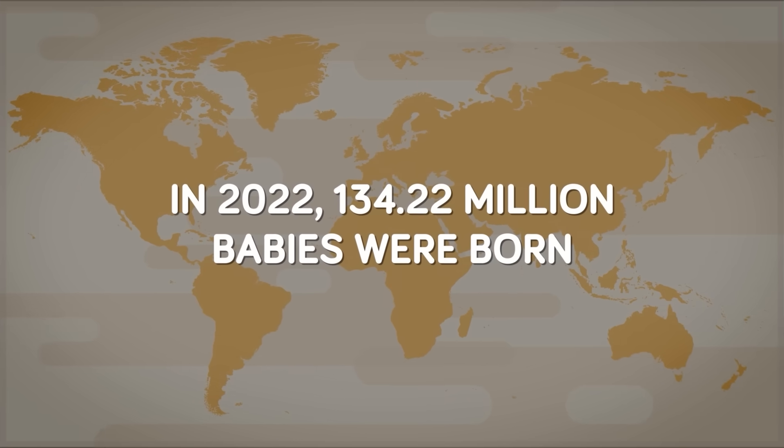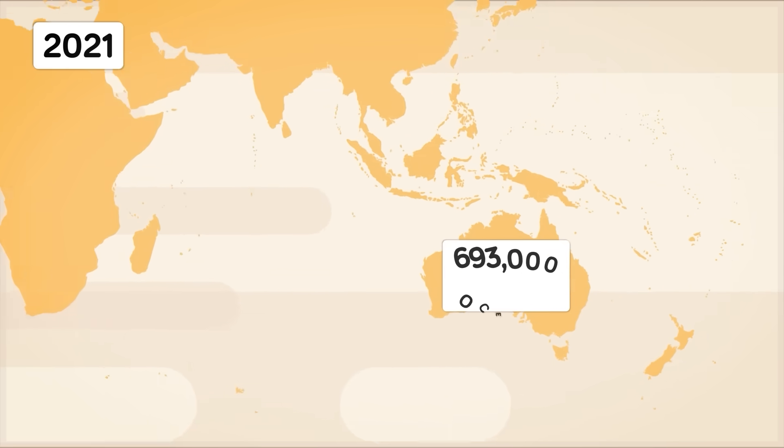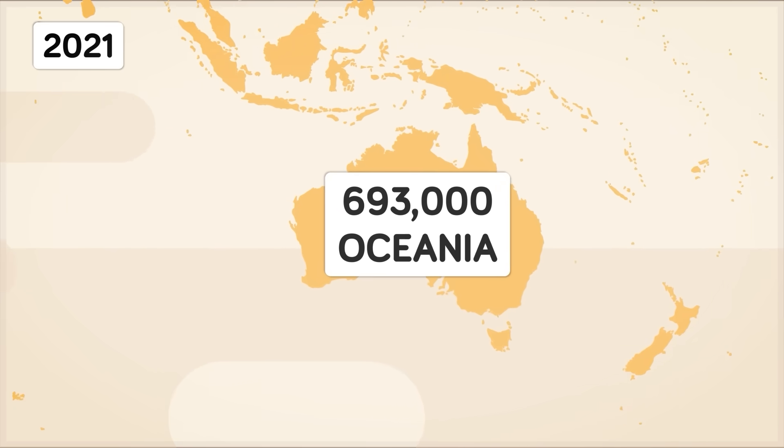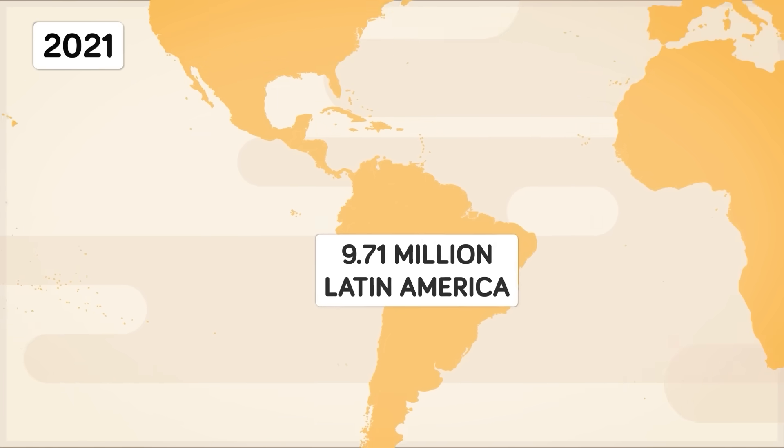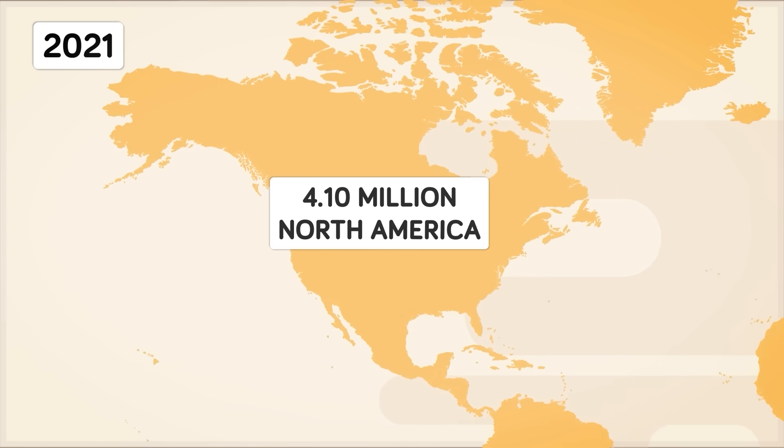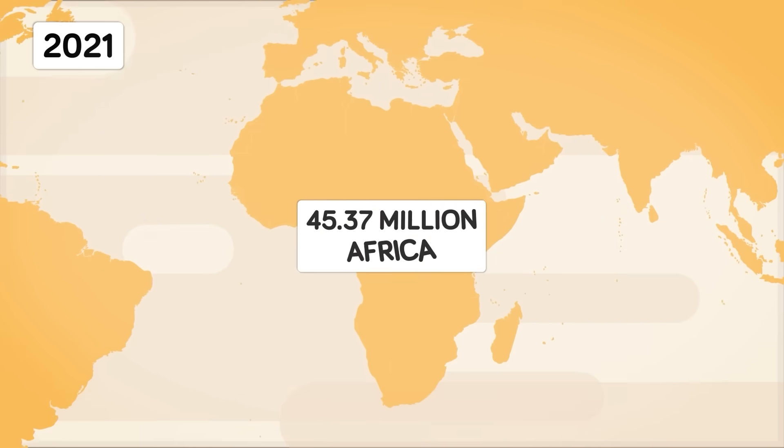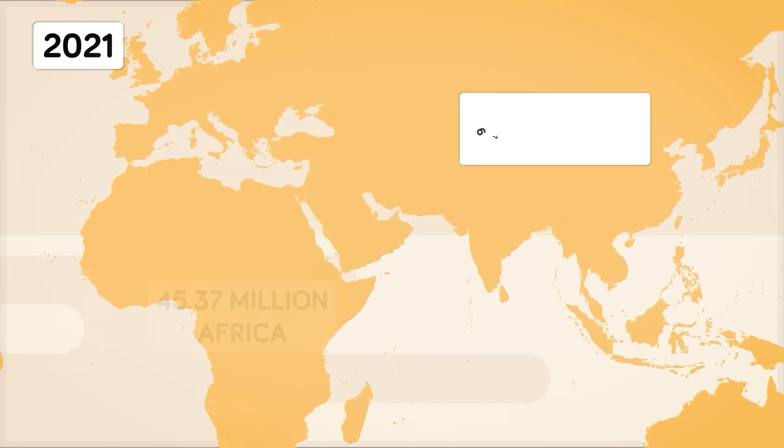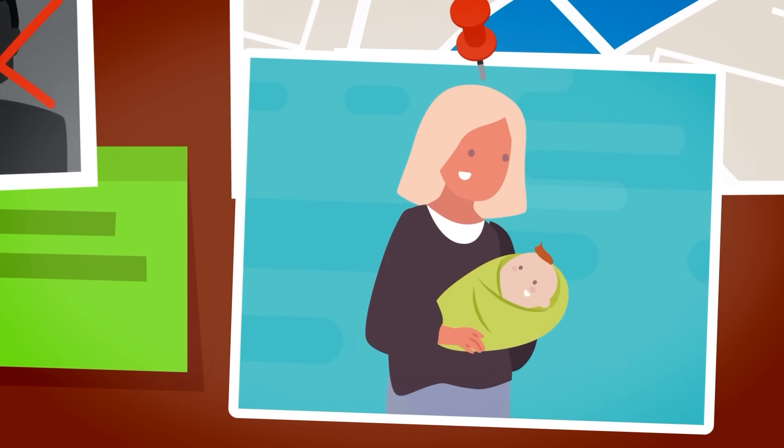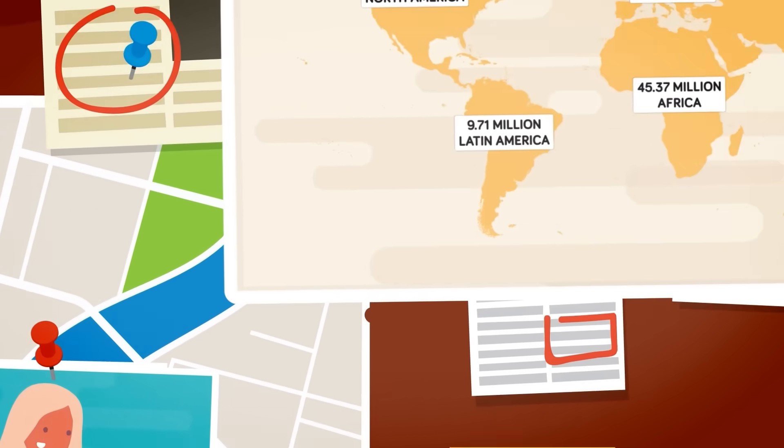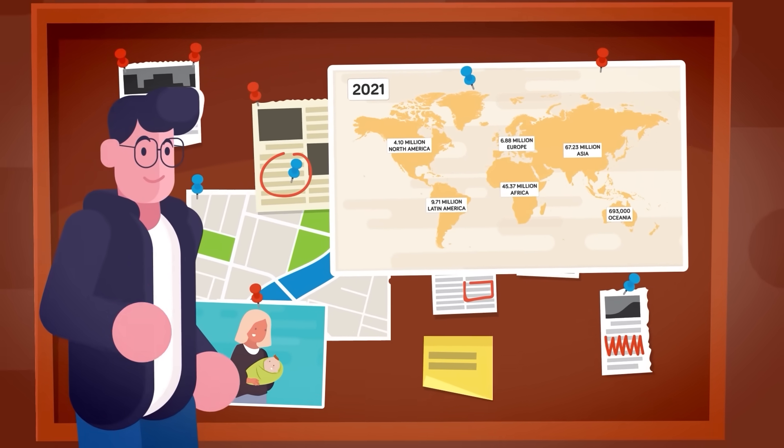In 2022, 134.22 million babies were born. In 2021, approximately 693,000 babies were born in Oceania, 9.71 million babies were born in Latin America, 4.1 million in North America, 6.88 million in Europe, 45.37 million in Africa, and 67.23 million babies were born in Asia. So it's clear that more babies are born in some parts of the world than others, but as stated before, this doesn't necessarily mean those regions are where overconsumption is happening.